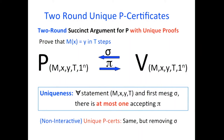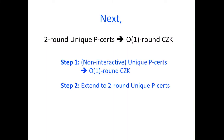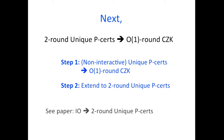In the construction coming up, it is convenient to think of a mental experiment where we have an even stronger tool: a non-interactive unique P-certificate, which is everything the same except there is no verifier's first message — just a one-shot succinct proof that is unique. Our approach will proceed in two steps: first construct using the non-interactive unique P-certificate, then show that the two-round version suffices. How to construct these two-round unique P-certificates from IO is left to the paper.